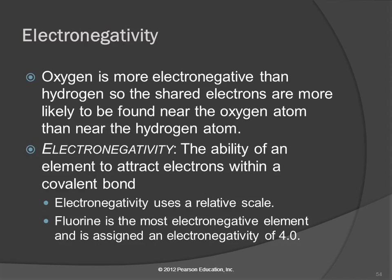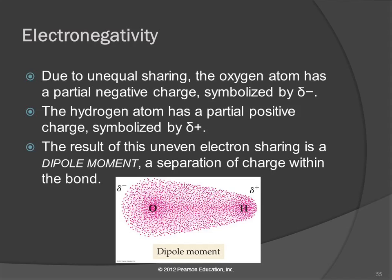Oxygen, we say, is more electronegative. Electronegativity can be defined as the ability of an element to attract electrons within a covalent bond. Electronegativity is just a relative scale. Fluorine is the most electronegative element — it's given an electronegativity of 4.0. Something with no attraction for electrons would be zero. We can look at the relative electronegativity of different elements and predict how they're going to share electrons.